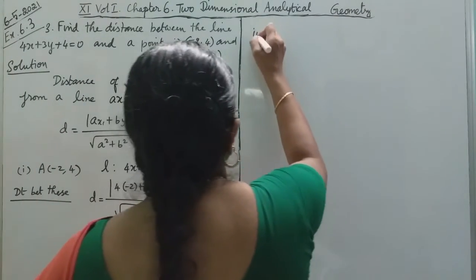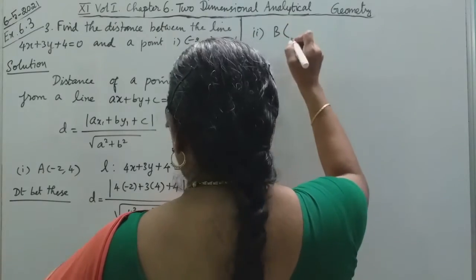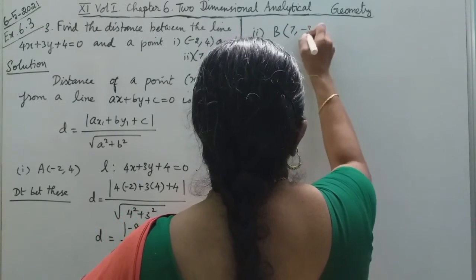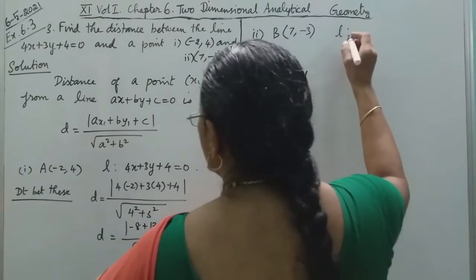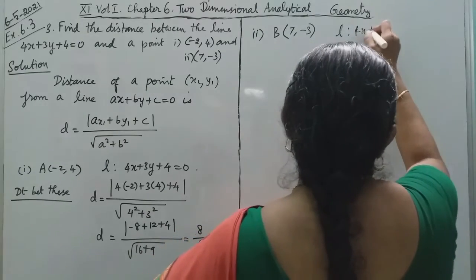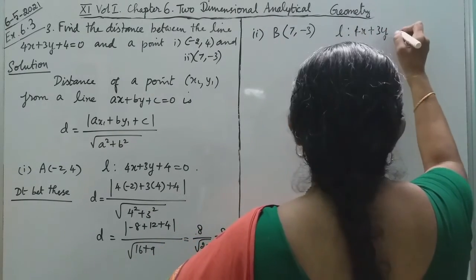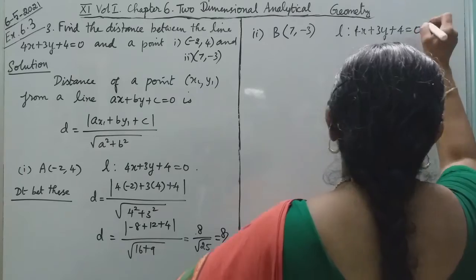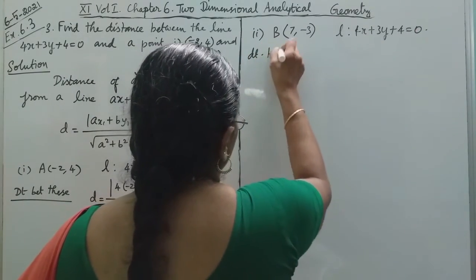Now for the second one, the point is (7, -3) and the line is 4x plus 3y plus 4 equals 0. Now let's find the distance between them.